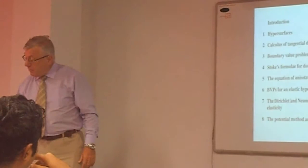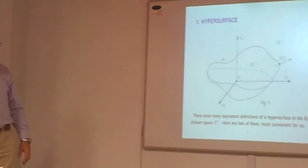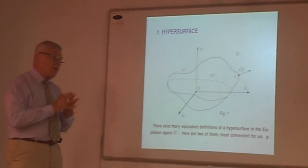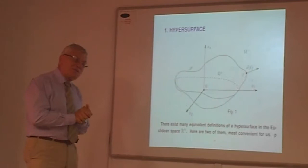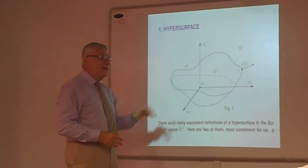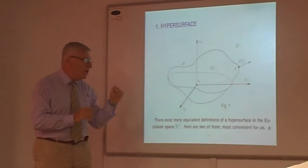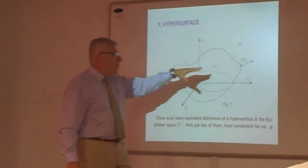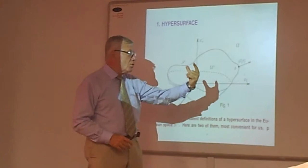First of all, let me start with the explanation of how we understand the surface. We understand surface as everybody, but there exist several definitions of hypersurfaces. Two of them are very useful for us. The first definition: we have surface in the Euclidean space. We have here a picture. At all points of the surface, you can put some unit normal vector, which is orthogonal to the surface. It's called unit normal vector.